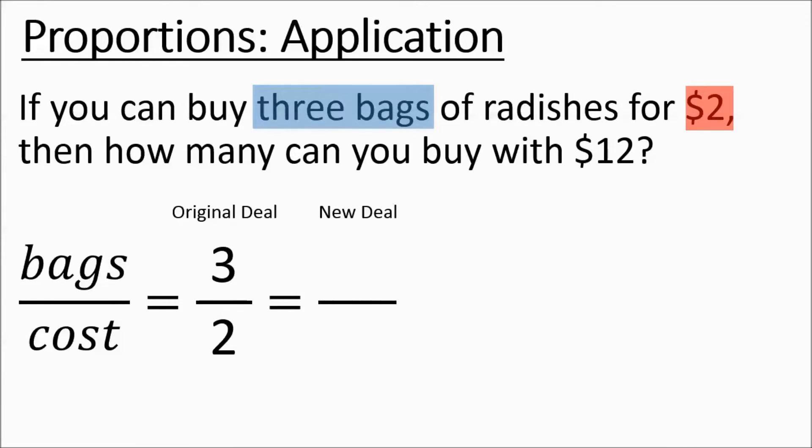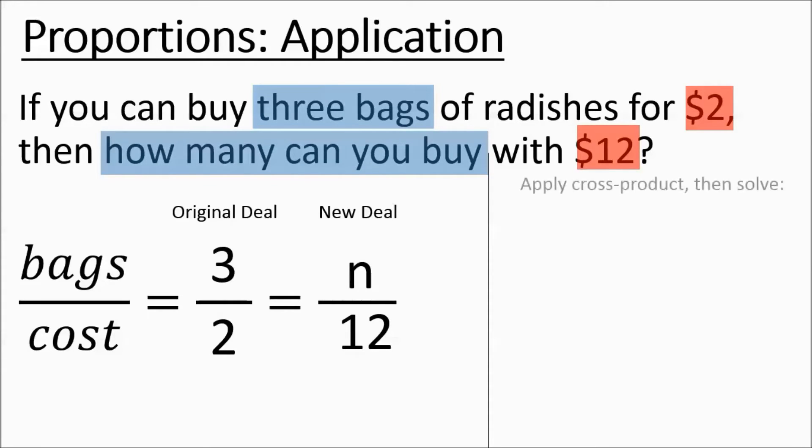So those first two numbers went together in the same ratio. That's not always the case but a lot of times it is. How many can you buy with $12? Well that $12 is the cost and we don't know how many bags that can get us but using the information we're going to set up our cross product rule and that's going to be 2 times n equaling 36 because 3 times 12 was my other diagonal pair.